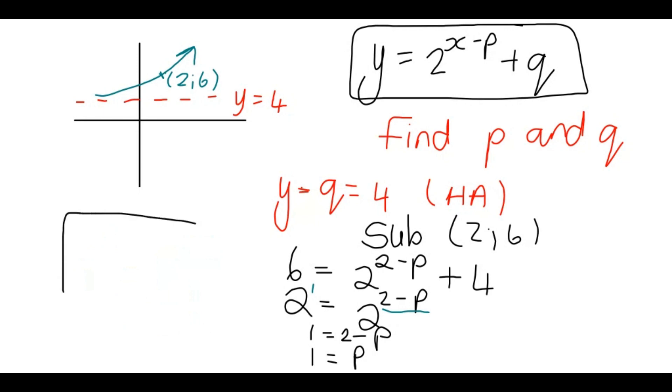Now I found p, I can substitute all of this back into my function. y equals 2 to the power, x we don't know, p is 1. So x minus 1 and q is a positive 4. So it's plus 4. And there's my answer.